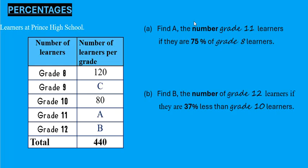Welcome to percentages. A number of learners at a given school are given in the table below with some values missing. Let's go to the first question: find A, the number of grade 11 learners, if they are 75% of grade 8 learners.